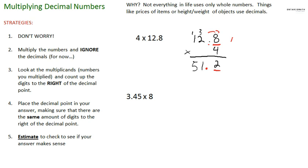We're just going to estimate to see if it makes sense. So 12.8, we're gonna round and that rounds to 13, and we're gonna multiply it by 4. So 4 times 3 is 12, 4 times 1 is 4 plus 1 is 5. So our estimate is 52.